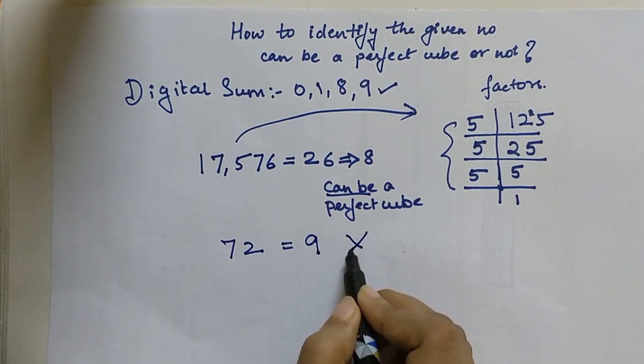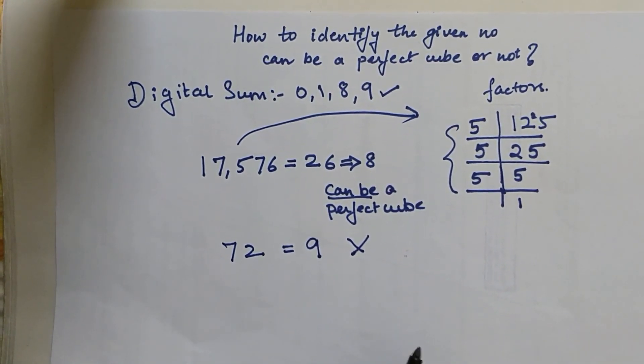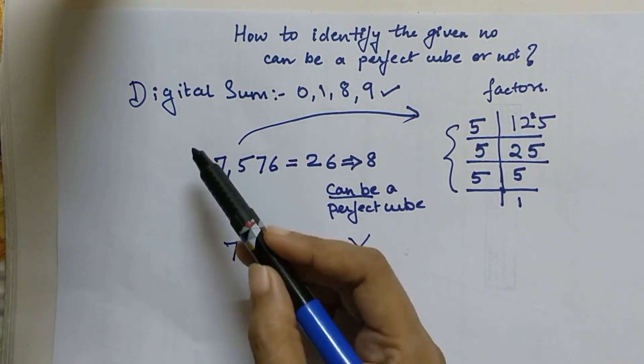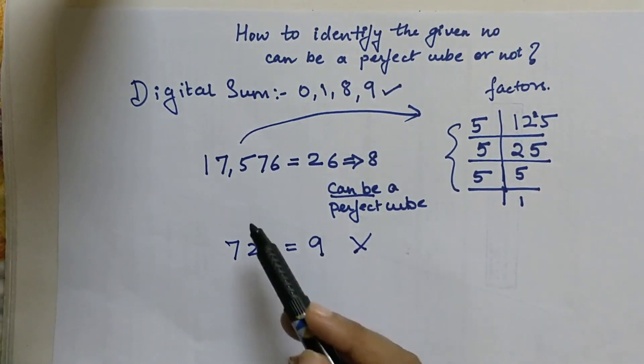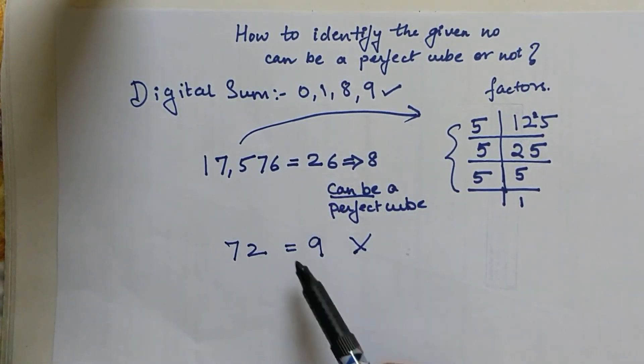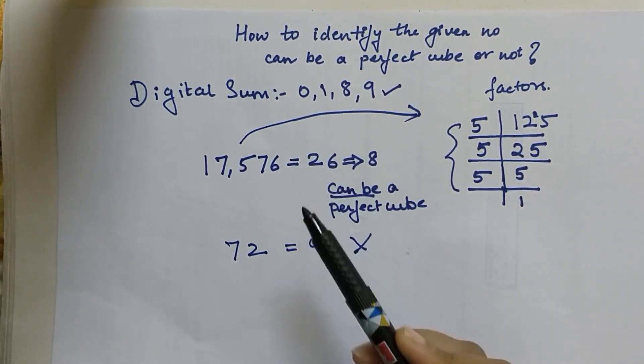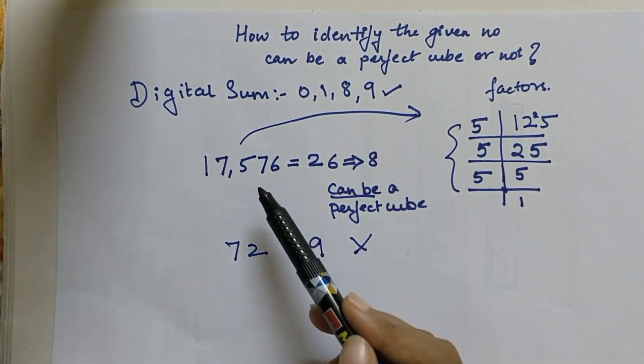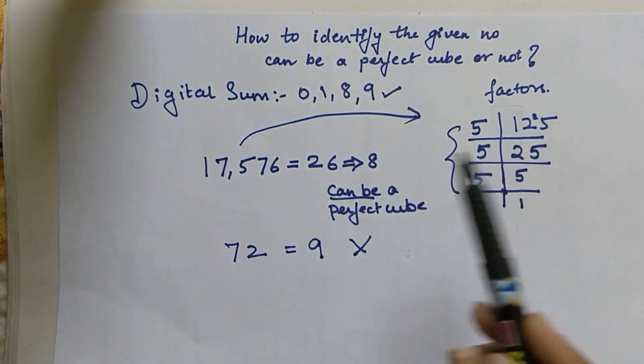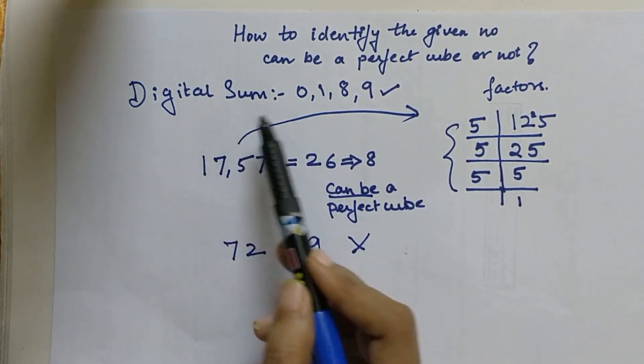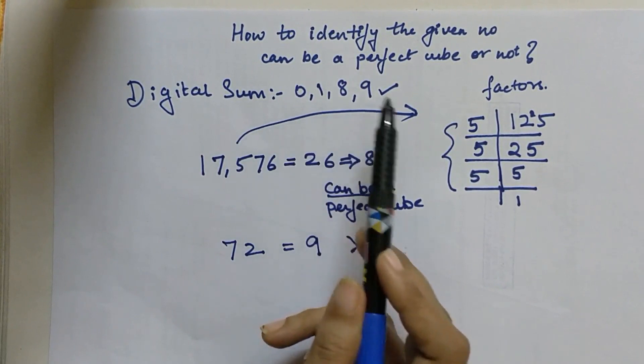I know a lot of books have given this trick as the trick to check whether the given number is a perfect cube or not. But as I showed you, not all the numbers whose digital sum is either 0, 1, 8, or 9 will be a perfect cube. To check whether the given number is a perfect cube or not, you will have to use this method. But this trick will help us to eliminate those numbers whose digital sum do not fall into any of these numbers.